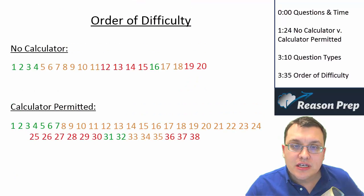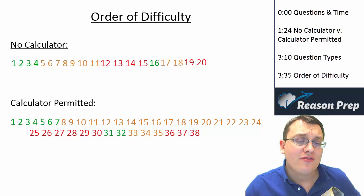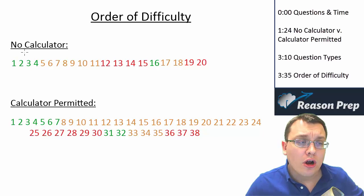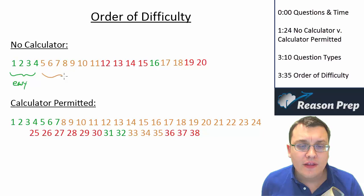There is an order of difficulty. It's a rough order of difficulty, but it does exist for the math section, so they do get harder as they go along. So you can imagine for the no calculator section, the first few questions are easy, the next set are medium, and then the last set are difficult.